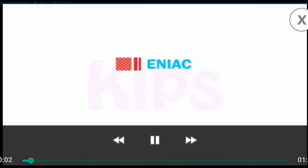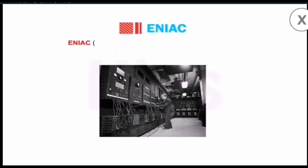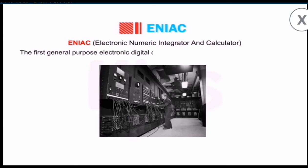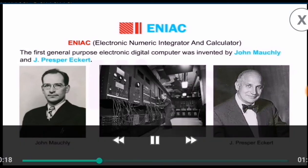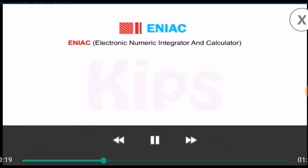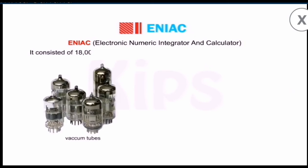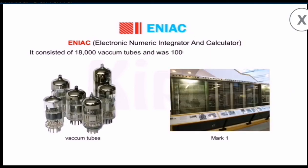What is ENIAC? Electronic Numerical Integrator and Calculator. The first general-purpose electronic digital computer, which was invented by John Mosley and J. Presper Eckert. It consisted of 18,000 vacuum tubes and was a thousand times faster than Mark I. Mark I was invented by Howard Aiken.